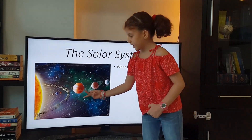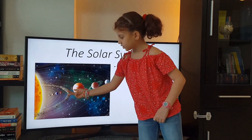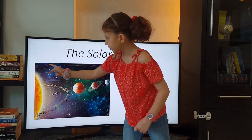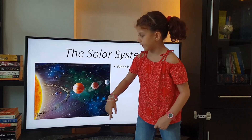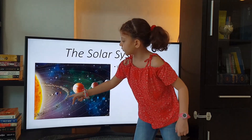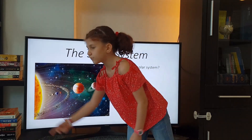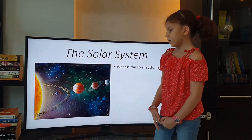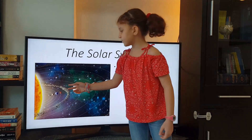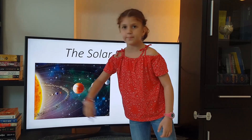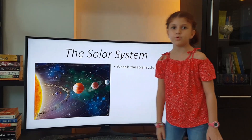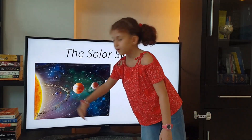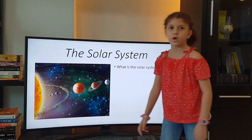The dwarf planets are not shown here. Four of them orbit in the Kuiper belt and one of them in the asteroid belt. Six of these eight planets have moons. Mercury and Venus do not.